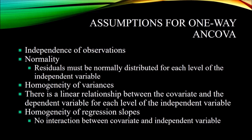The next assumption is homogeneity of variances, usually tested with Levene's test. Like Shapiro-Wilk, the output is a p-value: if less than 0.05, the assumption of homogeneity of variances is violated; if greater than 0.05, it is met. The next assumption is that there is a linear relationship between the covariate and the dependent variable for each level of the independent variable. Finally, there is the assumption of homogeneity of regression slopes, which requires that there is no interaction between the covariate and the independent variable.